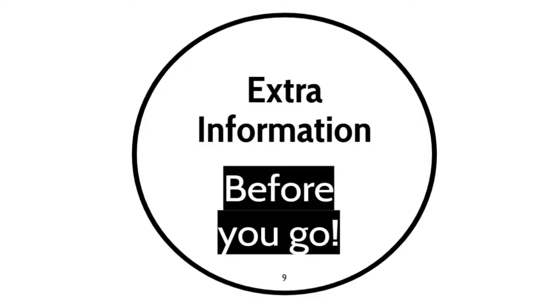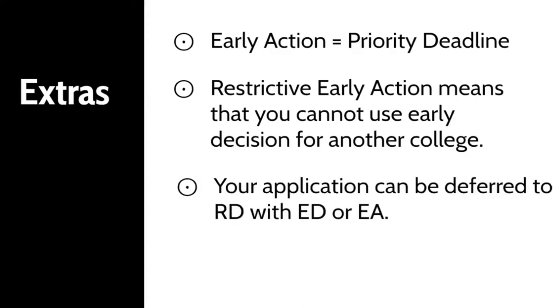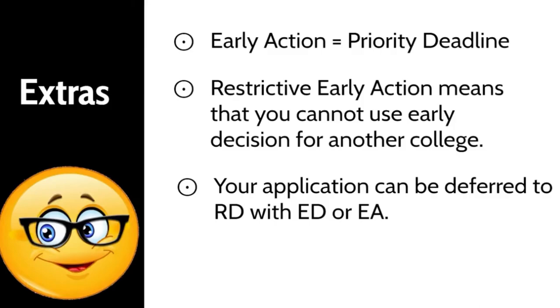Before you go, here are some additional things to keep in mind. Some colleges may prefer to use the phrase 'priority deadline' for an admissions process, but it works the same as Early Action. Also, using Restrictive Early Action means you cannot apply Early Decision to any other college — Restrictive EA is non-binding. Lastly, your application can be deferred to Regular Decision if you apply with Early Decision or Early Action. This does not mean that you are denied; it just means that you will be reconsidered under Regular Decision.